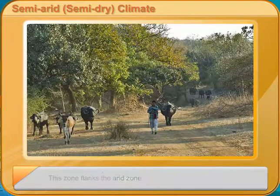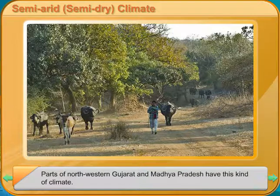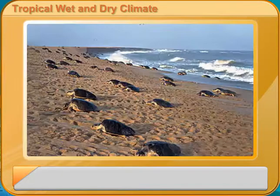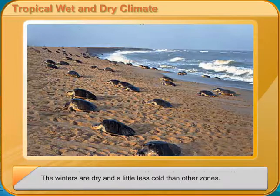Tropical wet climate. This zone has hot summers and gets heavy rain during the monsoons. The winters are not cold. Kerala, Lakshadweep, and the Andaman and Nicobar Islands lie in this zone.